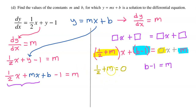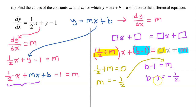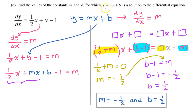The coefficient of x gives: one-half plus m equals 0, so m equals negative one-half. The constant term gives: b minus 1 equals m, substituting m equals negative one-half yields b minus 1 equals negative one-half, so b equals positive one-half. Therefore, if y equals mx plus b is a solution to the differential equation, then m equals negative one-half and b equals positive one-half.